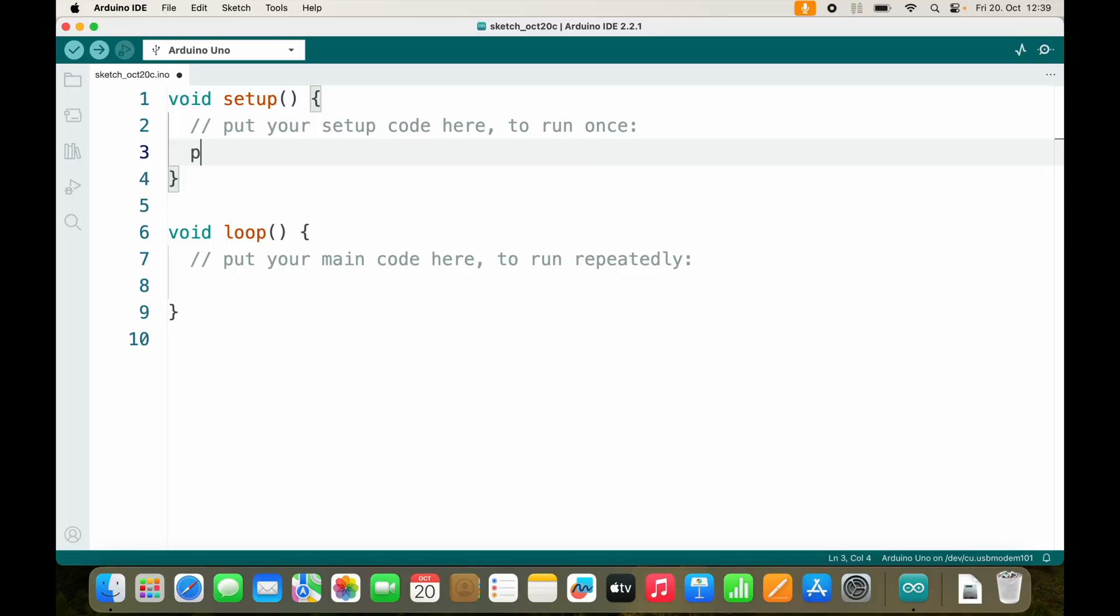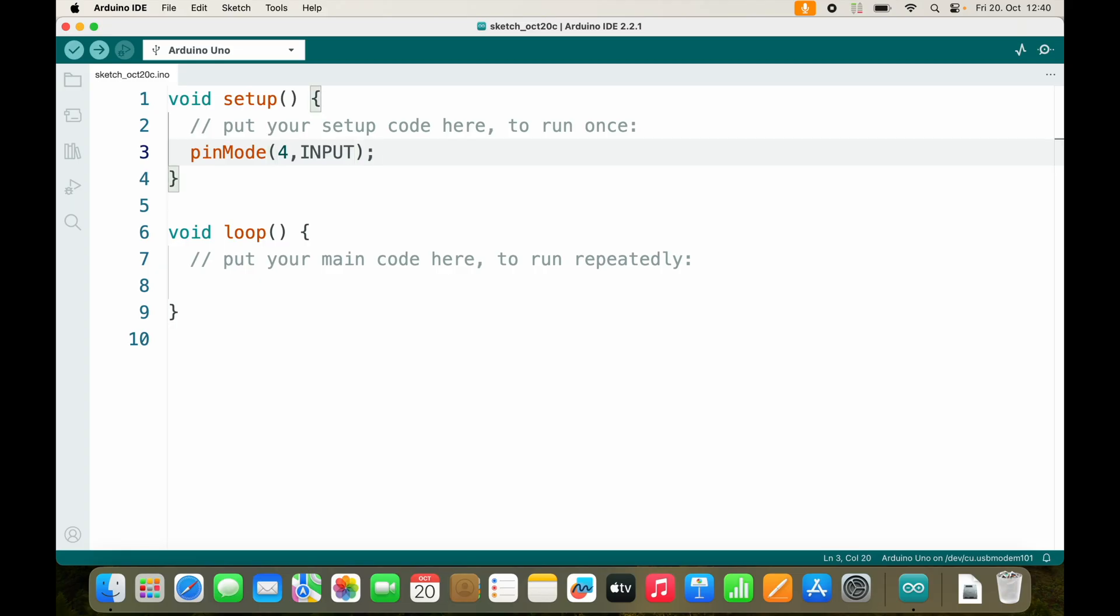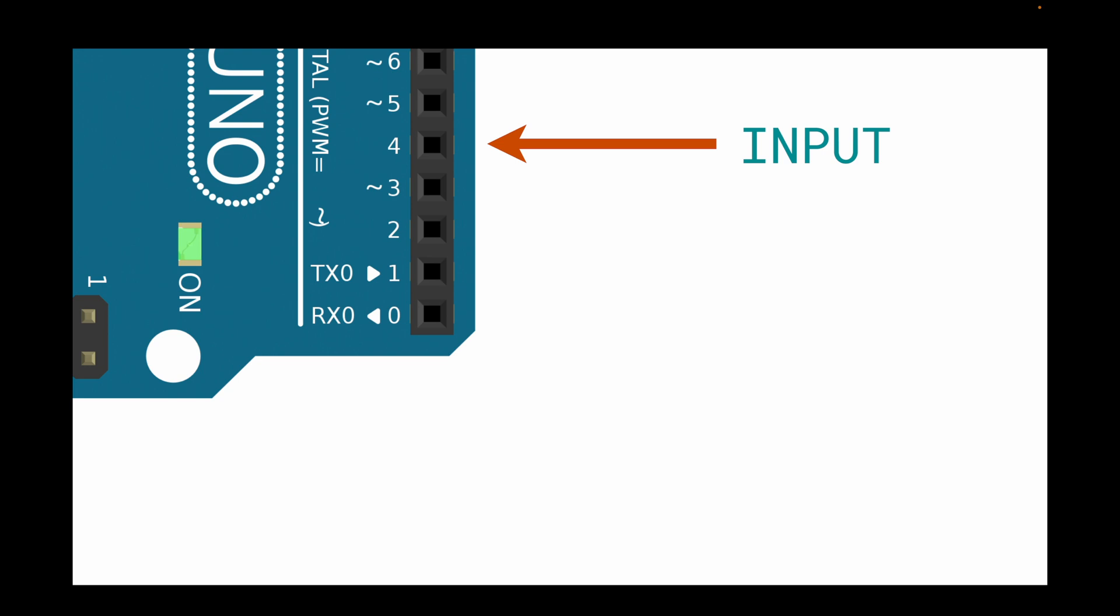In order to use an input we need to pick a pin and define it as input. We will use the function pinMode in order to define pin 4 as input. Be sure to write INPUT in capital letters. We will define pin 4 as input.